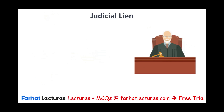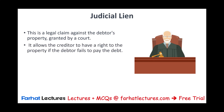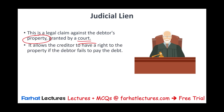What is a judicial lien? A judicial lien is something related to the court — the judicial system. This is a legal claim against the debtor that allows the creditor to get the debtor's property, and it's granted by a court. It allows the creditor to have the right to the property if the debtor fails to pay the debt. If you can't pay the debt, the creditor goes to court, shows all their paperwork, and has a legitimate claim to obtain and sell your asset.